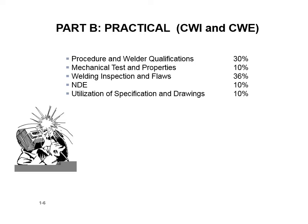You're going to be a certified weld inspector, so you should have a thorough knowledge of weld inspection. NDE is 10% and utilization of specifications and drawings is 10%. If you understand procedure and welder qualifications and welding inspection and flaws, that's 66%. You need 72% to pass, so you just need to pick up another 10 or 12%. Don't spend a disproportionate amount of time on specifications and drawings while blowing off weld inspection and flaws.